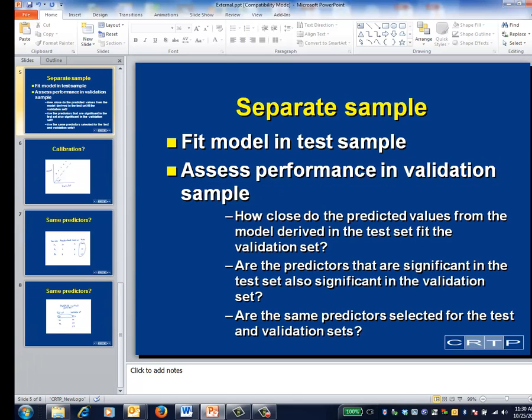If you have two separate samples, sometimes called a test sample and a validation sample, the idea is to refit your model in the validation sample in order to assess whether the performance in that sample is similar to that in the test sample. Precisely what element of model performance you assess in the validation sample depends on the application. This slide lists three different questions that you might ask, each of which corresponds to a different validation method.